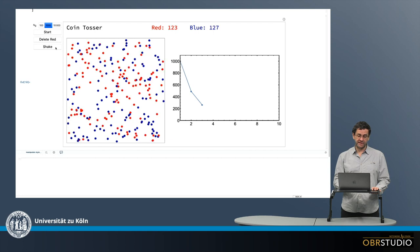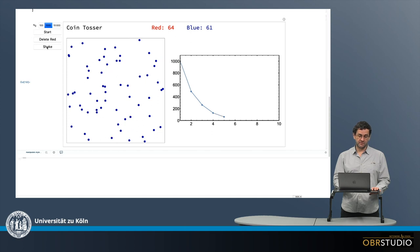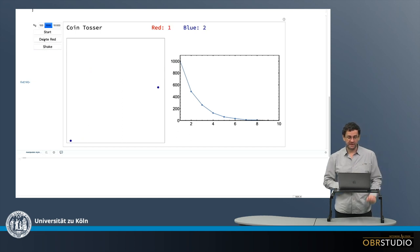And then I shake it again and delete the red again. So delete the strontium-87 so we just see the remaining rubidium-87 and then shake it again and again and again. And then I do this 10 times. So now we are at 9 and then we are at 10 times.